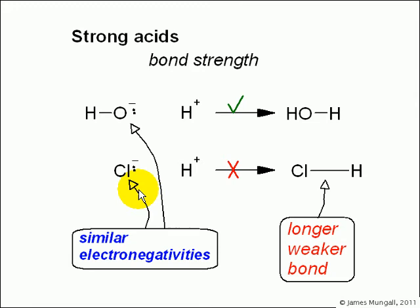Combined with that, we sometimes need to look at bond strength, because actually if you were to compare HO minus with Cl minus, we know that HO minus will react with H plus to give you water, that would just be an acid base reaction. But HCl is a strong acid, so Cl minus doesn't react with H plus to give you HCl in solution, whereas the electronegativity of oxygen and chlorine are quite similar here. So the reason for this is not to do with electronegativity, it's to do with the bond strength.